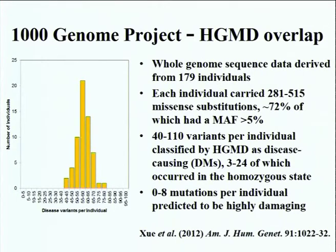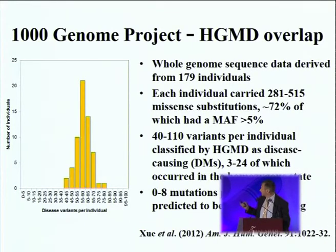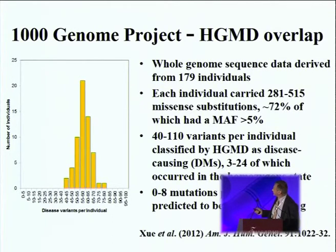What we did was team up with Chris Tyler-Smith's group at the Sanger Institute in Cambridge to do a formal analysis comparing the 1,000 Genomes Project data with our own HGMD data. As you'll see from this summary of our analysis — published in the December 2012 issue of the American Journal of Human Genetics — we took whole genome sequences from 179 individuals from the 1,000 Genomes pilot project.